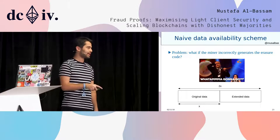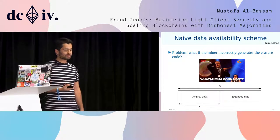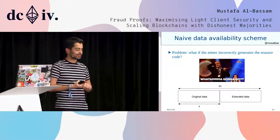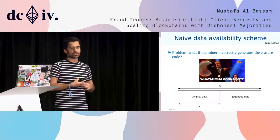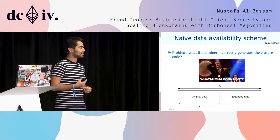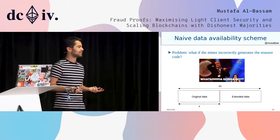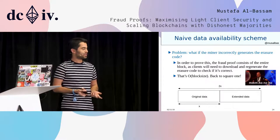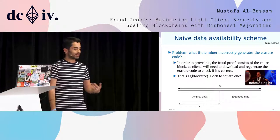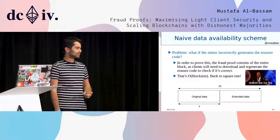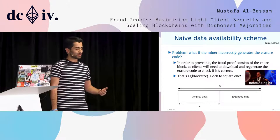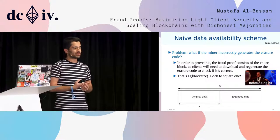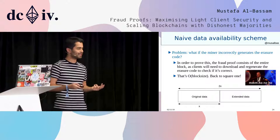The problem with the scheme I've described so far is: what if the miner actually incorrectly applies the erasure code? What if they just insert gibberish in the extended part of the data? Then if you actually lose 50% of the block, that gibberish data is not going to help you reconstruct the entire block. If you wanted to prove this to a light client, you would basically have to give them the entire original data, and they would have to recompute the erasure code themselves. This is going back to square one — the fraud proof would be equivalent to the size of the block itself, which is what we're trying to avoid.